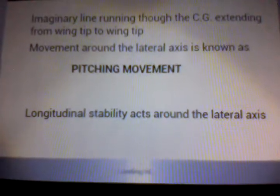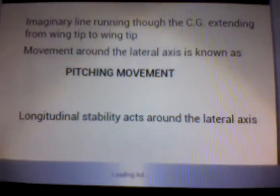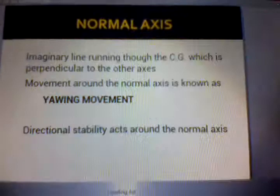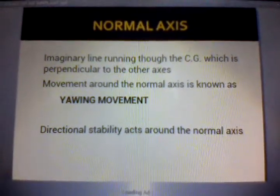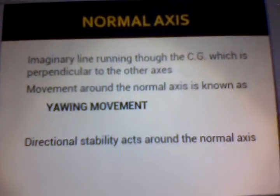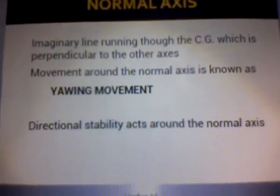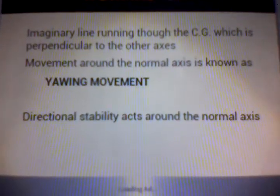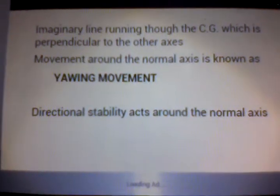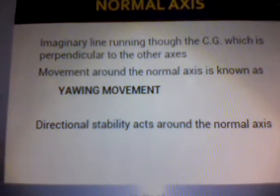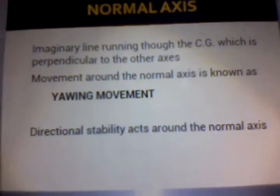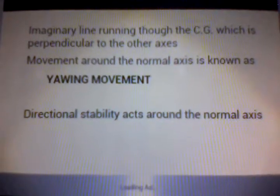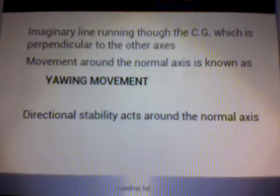Longitudinal stability acts around the lateral axis because you want a plane to keep steady and stable as possible. Then you have the normal axis — a line running through the CG, which is perpendicular to the other axes. The movement around the normal axis is known as the yaw movement. These notes help you out in flying. The directional stability acts around the normal axis.